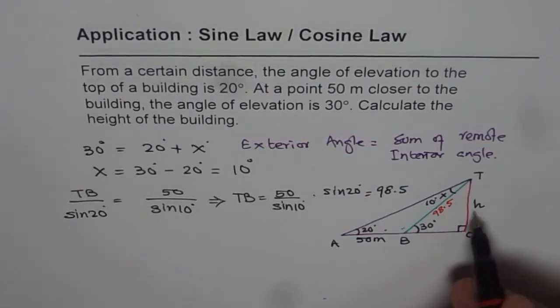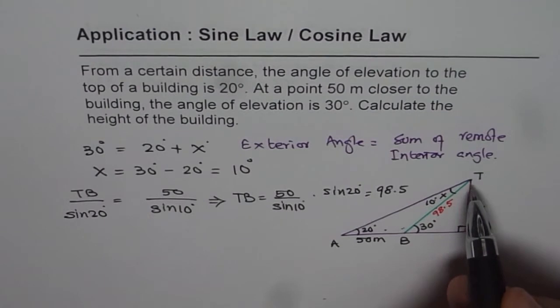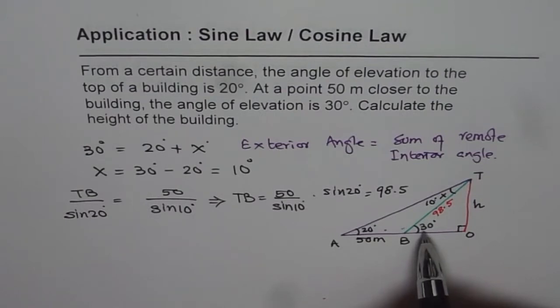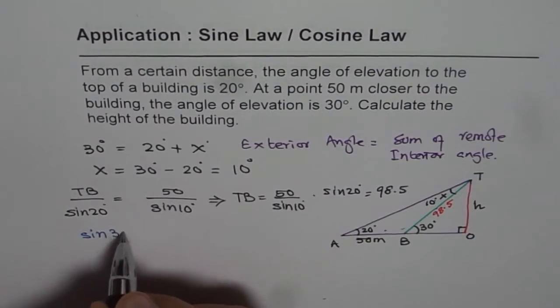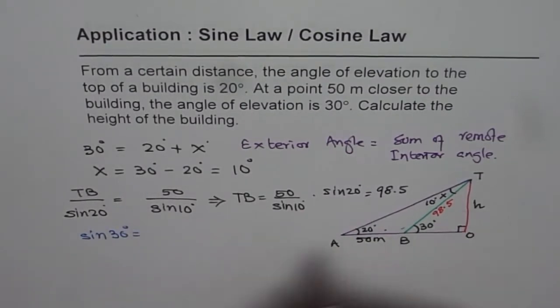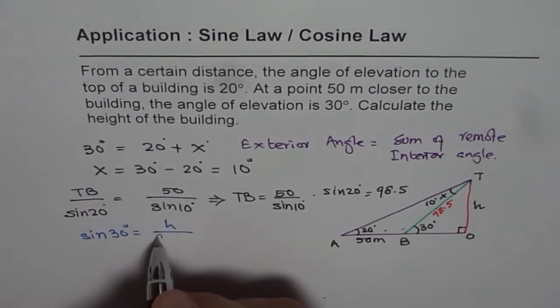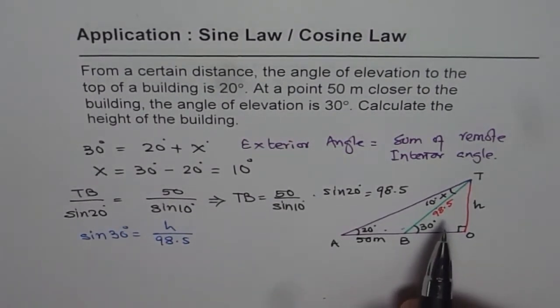So we get this hypotenuse as 98.5. Now once we know this hypotenuse, we can find the height, correct? So now we are considering the right triangle TBO. So in the right triangle TBO, sine of 30 degrees is how much? h over 98.5, right? Now we have sine of 30 degrees equals height of the building h over the hypotenuse of this triangle, which is 98.5. Well, it was better to use 98.48.